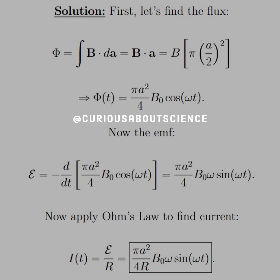So phi as a function of time, after we plug in B, is π A² over 4, times B dot cosine ωt. We can quickly find the EMF by taking the negative time derivative — cosine goes to negative sine, and applying the chain rule gives us another factor of ω. After simplifying, we apply Ohm's Law. Solving for I gives E over R, which simplifies to π A² over 4R times B dot ω sine ωt. Pretty straightforward, but good to test your understanding.